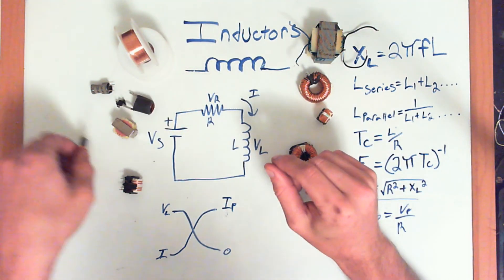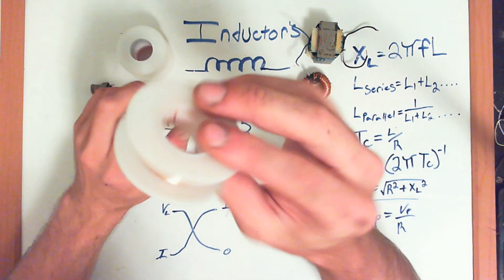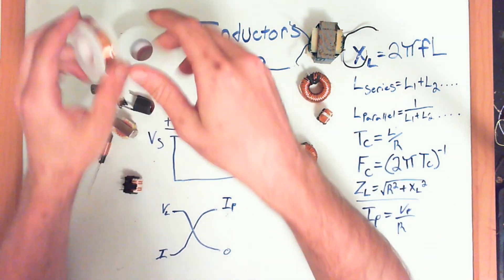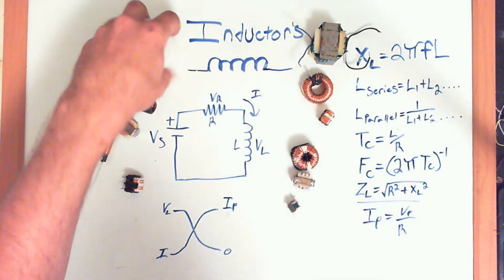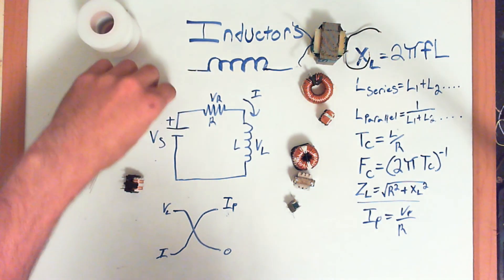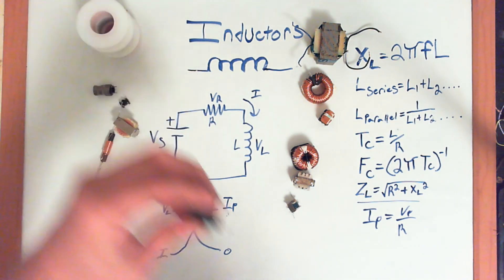The wire that you have to use, though, is a special enamel-coated wire that has a little film around it that keeps it from touching other coils and bypassing the loops.